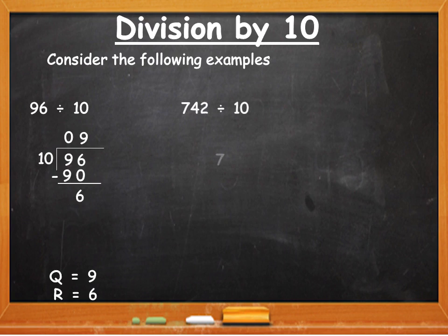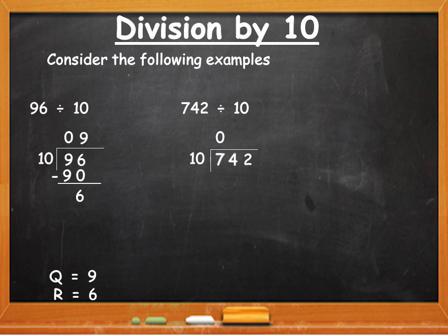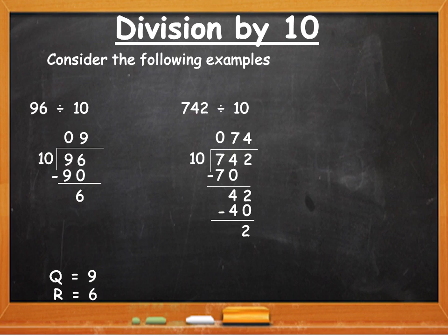742 divided by 10. 742 is a three-digit dividend. You write the dividend and divisor. You cannot divide 7, so you write a 0 above 7 and divide 74 by 10. 10 will go 7 times in 74; 10 sevens are 70. Subtract — remainder 4 — and bring down 2. Divide 42 by 10; 10 will go 4 times, minus 40, remainder is 2. So the quotient is 74 and the remainder is 2.